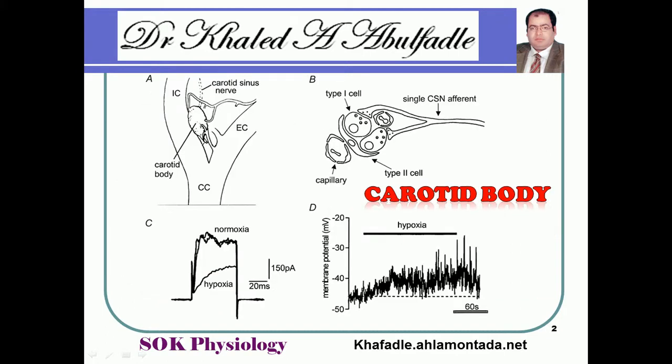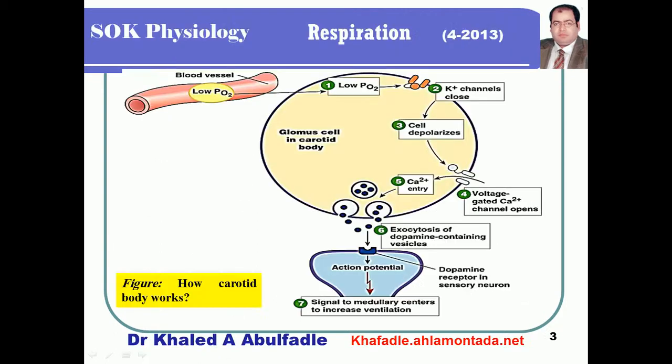Now we will discuss the carotid body and its role in the regulation of respiration. The carotid body is present at the bifurcation of the common carotid artery. It is formed from two types of cells: glomus cells (also called type I cells) and sustenticular cells, which are supporting cells.